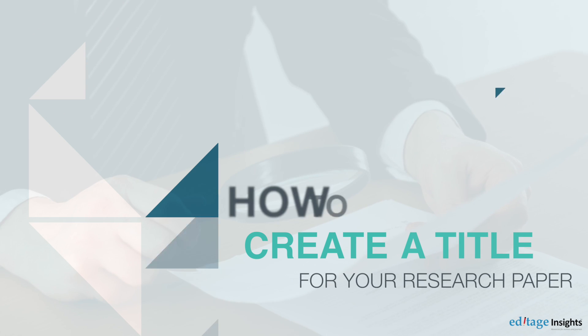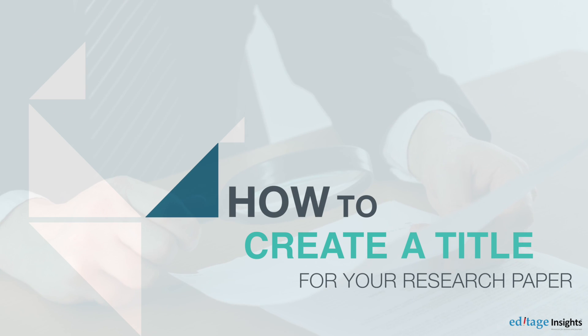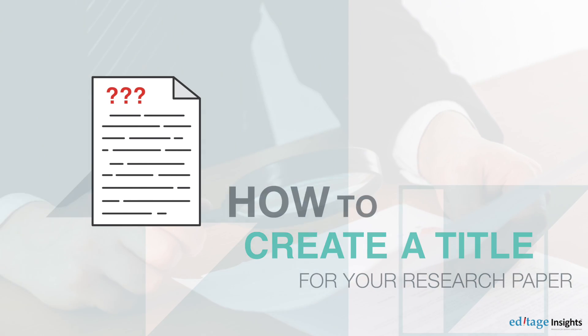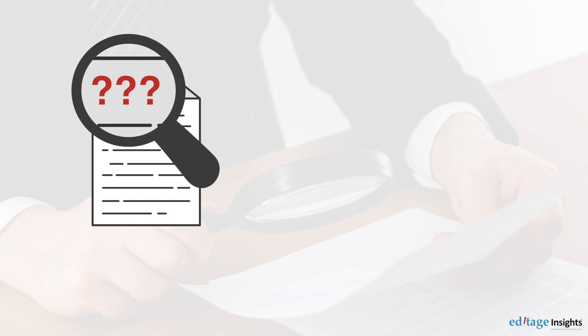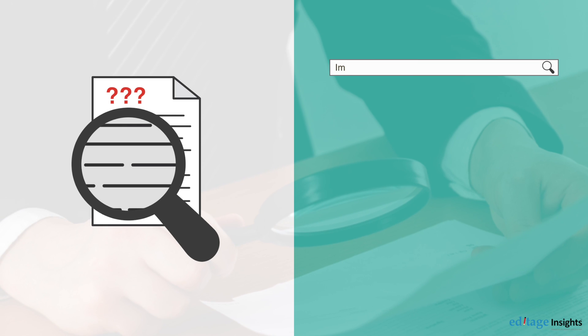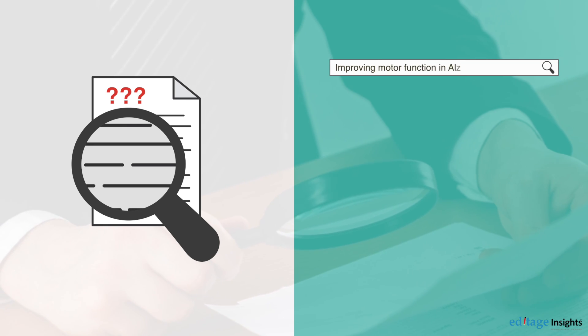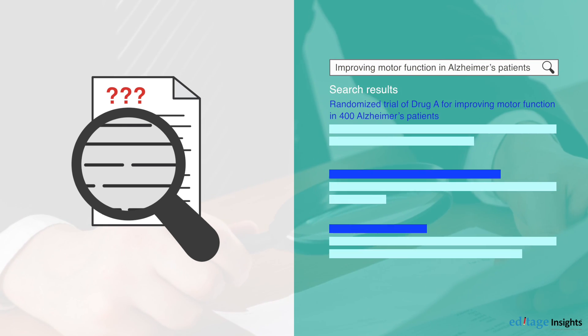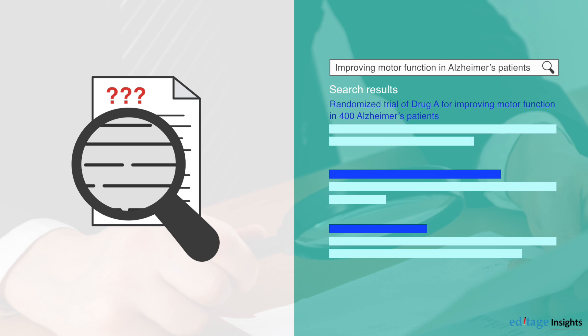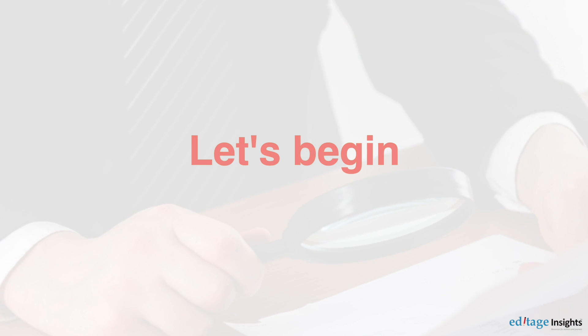Hello! Today we'll discuss the most important aspect of a research paper: the title. The title is the first thing journal editors and reviewers will see when they receive your paper. It is also the only aspect that will be freely available to readers through search engines or indexing databases. Follow these steps to create the perfect title for your paper.